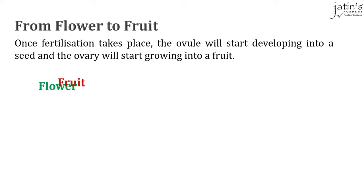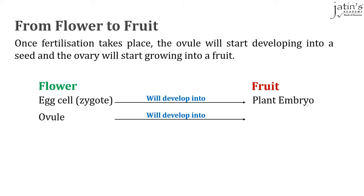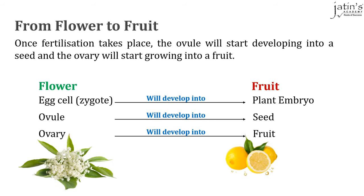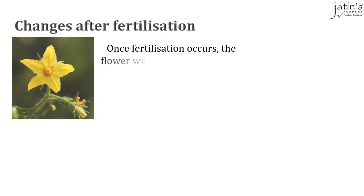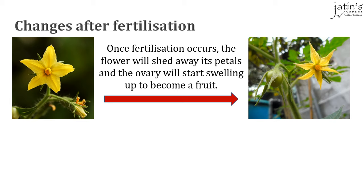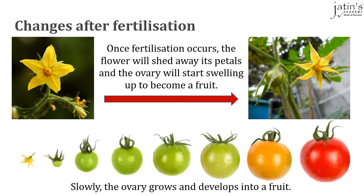Let's see how a flower turns into a fruit. The egg cell — the zygote which was formed — will further develop into a new plant embryo. The ovule will go on to develop into a new seed, and the ovary will develop into a fruit. Once fertilization occurs, the flower will shed away its petals and the ovary will start swelling up to become a fruit. Slowly and gradually, the ovary grows and develops into a fruit.